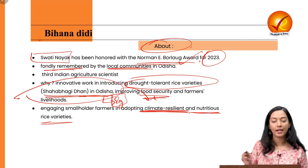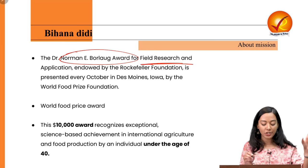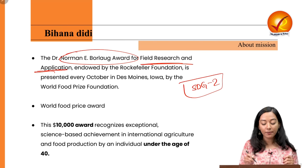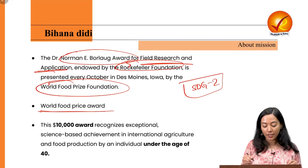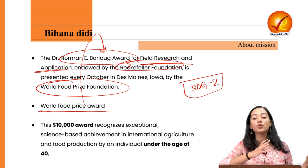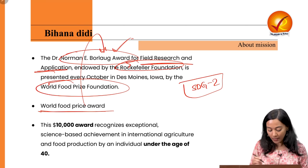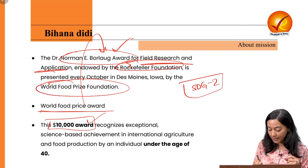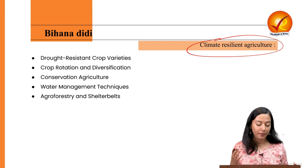The Norman Borlaug Award is given in the field of agriculture for field research and application ensuring food security, in line with SDG Goal 2 (Zero Hunger). It is given by the Rockefeller Foundation along with the World Food Prize Foundation — hence also known as the World Food Prize Award. It is named after Norman Borlaug, an American agricultural scientist known as the Father of the Green Revolution globally, akin to M.S. Swaminathan's role in India. The award carries a $10,000 cash prize and requires the recipient to be under 40 years of age.